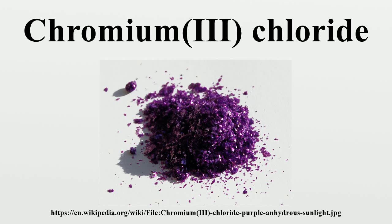Chromium chloride displays the somewhat unusual property of existing in a number of distinct chemical forms, which differ in terms of the number of chloride anions that are coordinated to Cr and the water of crystallization. The different forms exist both as solids and in aqueous solutions. Several members of the series CrCl3·nH2O are known. The main hexahydrate can be more precisely described as [CrCl2(H2O)4]Cl·2H2O.